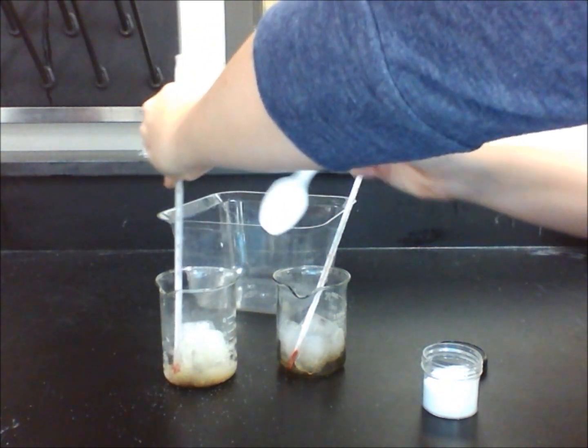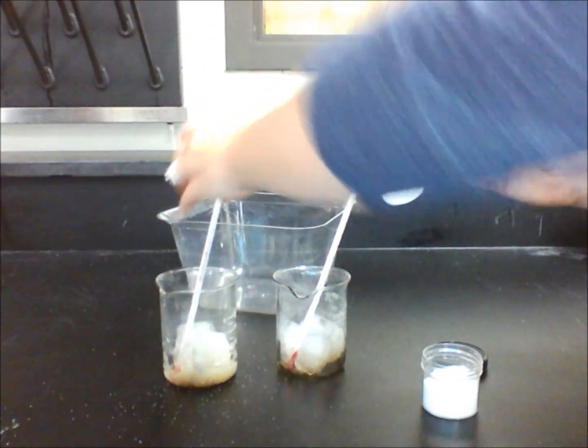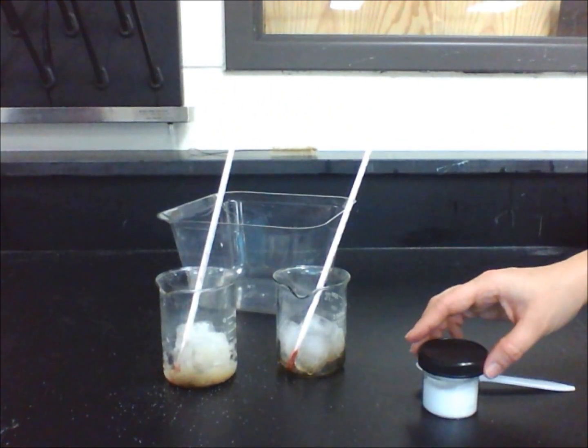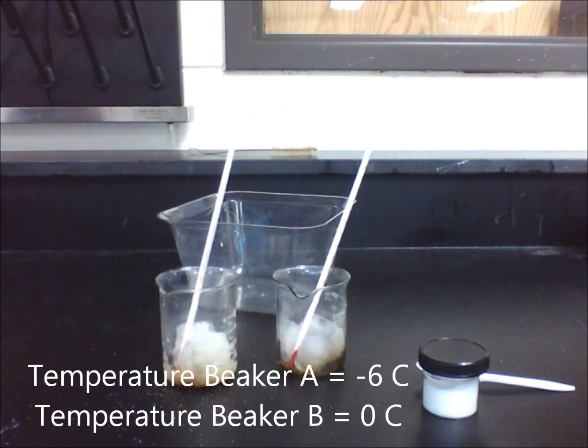And measure the temperature of the crushed ice in beaker A and beaker B. Record your results in table 1. The temperature for beaker A decreased again significantly while beaker B decreased by a little bit or by nothing at all.